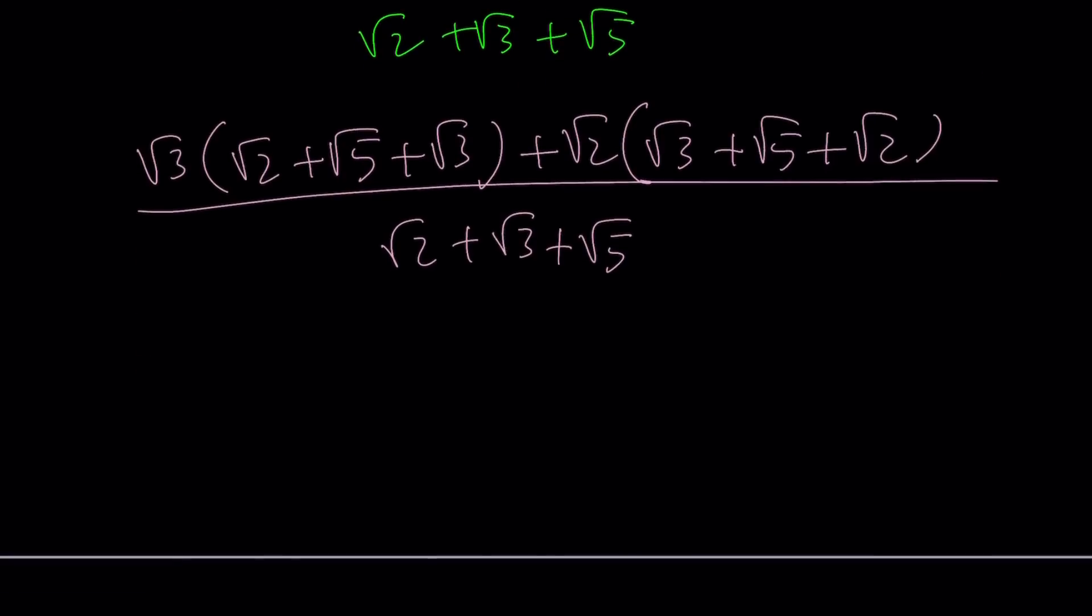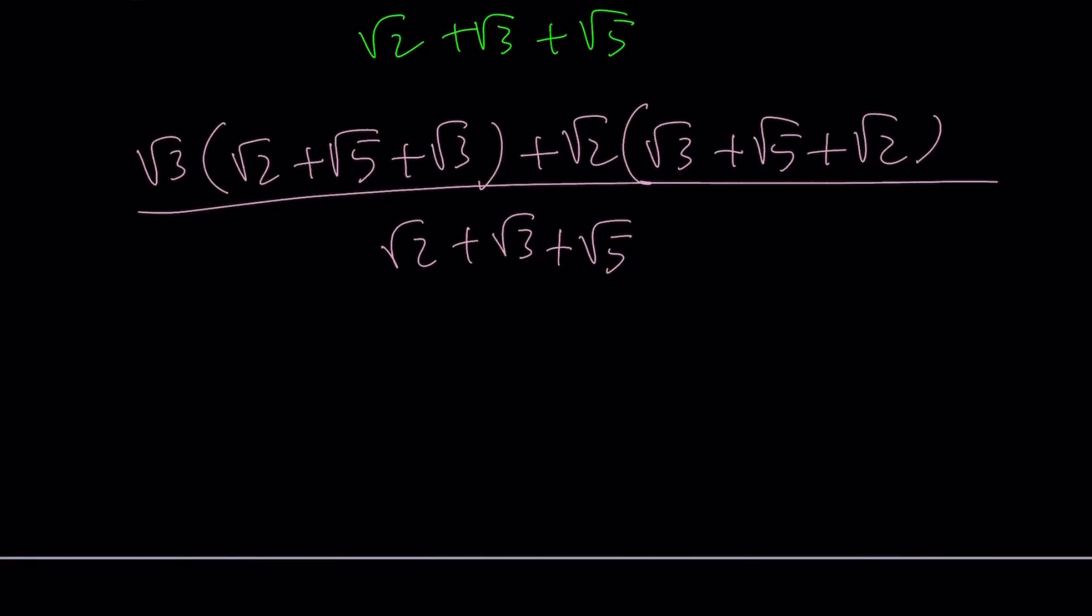Awesome. Now, I noticed that the expressions inside the parentheses are the same. So that is a common factor, this and this. So we can take it out. What is it? Root 2 plus root 3 plus root 5.